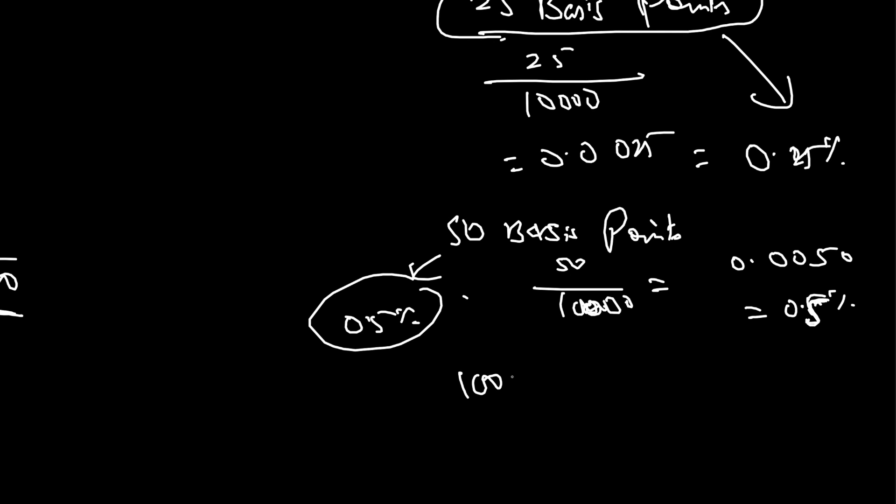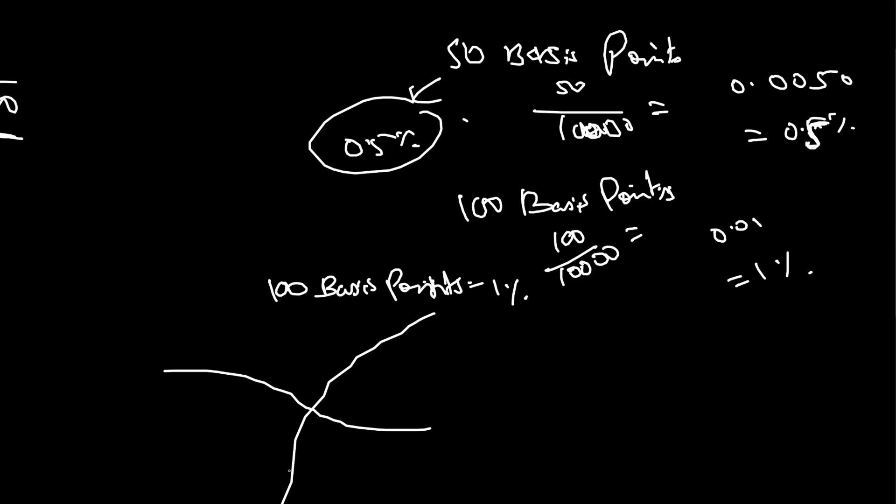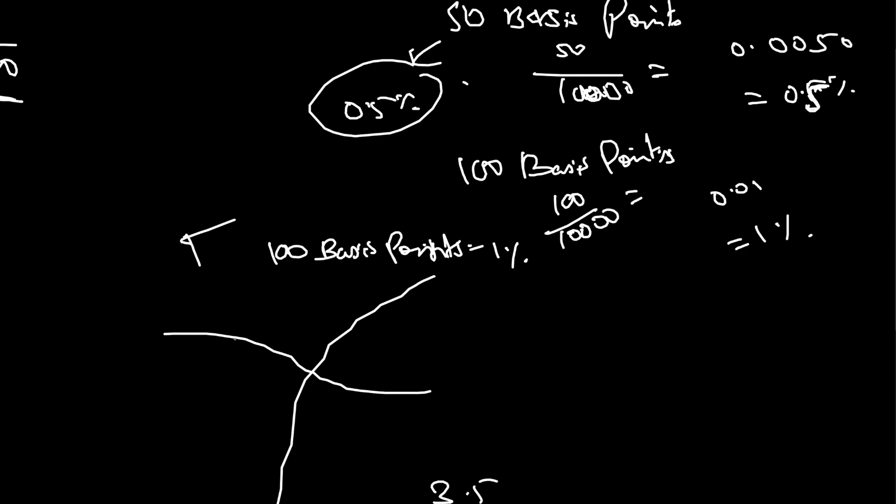If it is 100 basis points, 100 basis points will be 100 divided by 10,000, that comes to 0.01, which is 1 percentage. So, 100 basis points is equal to 1 percentage.